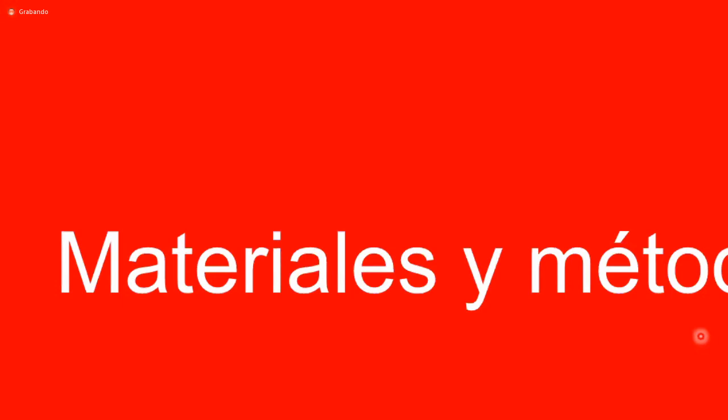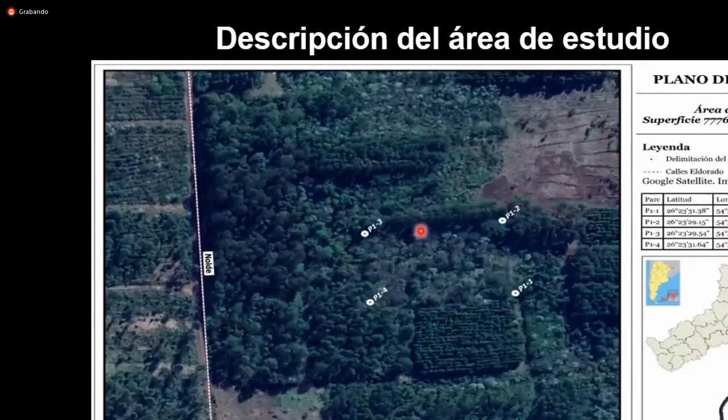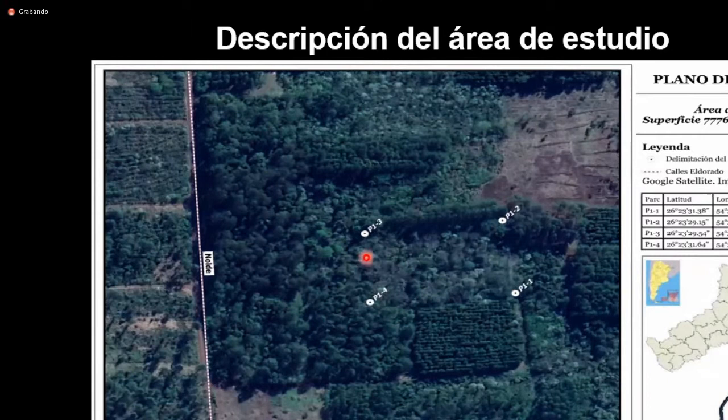En cuanto a materiales y métodos, el área de estudio se encuentra en un predio de la Universidad Nacional de Misiones, en campos de las Facultades de Ciencias Forestales y Escuela Aerotécnica, en El Dorado, Misiones. Posee una superficie de 7.776 metros cuadrados. Este sitio es un área experimental con un diseño ya establecido, que se instaló en el año 1990 a través de un convenio realizado con la Facultad de Ciencias Forestales y la Universidad de Yale de Estados Unidos.